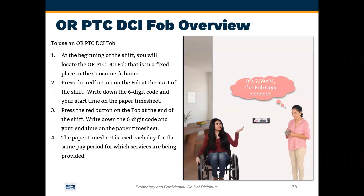To use an ORPTC DCI FOB, at the beginning of your shift, you will locate the FOB that's in a fixed location in the consumer's home. Press the red button on the FOB at the start of your shift and write down the six-digit code displayed, along with your start time, on a paper timesheet. At the end of your shift, go back to the FOB and press the power button to display another code. Write down that six-digit code along with your end time on the paper timesheet.